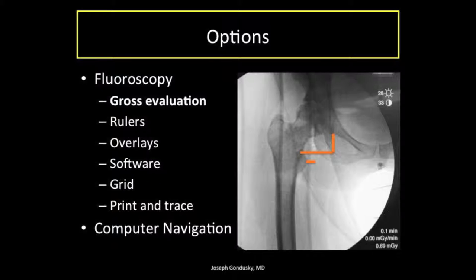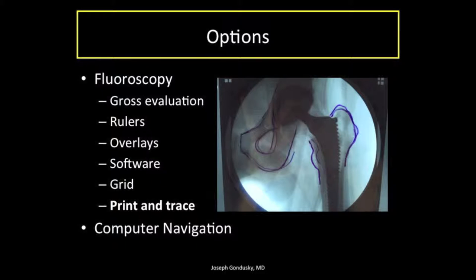Rulers can be used to measure distances on the fluoroscopy screen — reasonable but cumbersome and prone to some error. Images can be printed preoperatively or intraoperatively for comparison and overlaid to determine changes, though changing the height of the table or fluoro unit causes magnification changes that make this difficult. I also have some concerns about sterility when required to change gloves and walk across the room. A grid placed under the patient has been described but seems to obscure bony anatomy. Computer navigation and software are expensive and cumbersome; I don't currently think they add much to fluoro-aided anterior approach hip arthroplasty.